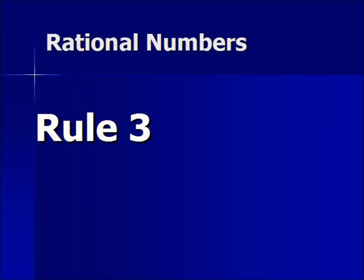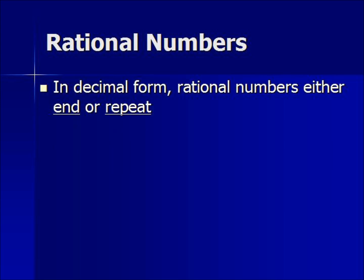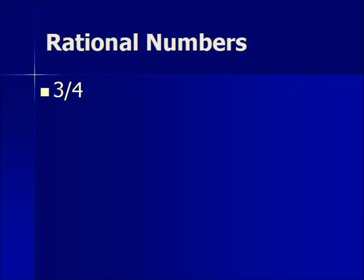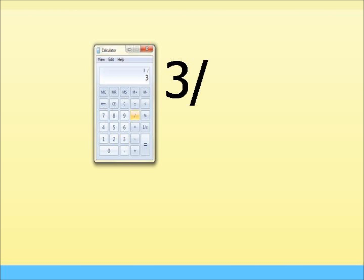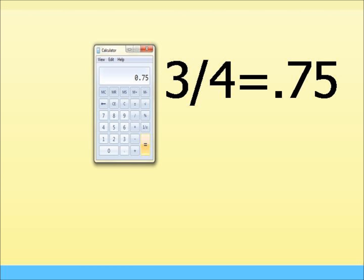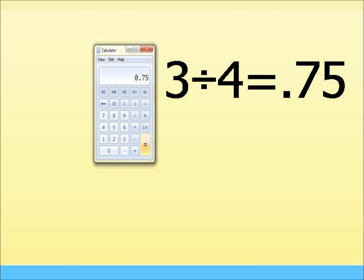Rule 3: In decimal form, rational numbers either end or they repeat. Here's a fraction 3 over 4, which also means 3 divided by 4 — the fraction bar or forward slash can mean division. So let's plug that into our calculator: 3 divided by 4 equals 0.75. This fraction in decimal form ends, so this number is rational.